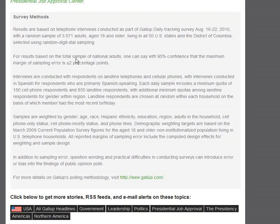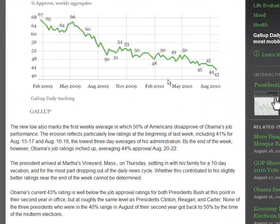For results based on the total sample of adults, one can say with 95% confidence, or there's a 95% probability, that the maximum margin of sampling error is plus or minus 2 percentage points.